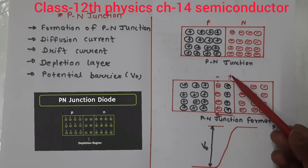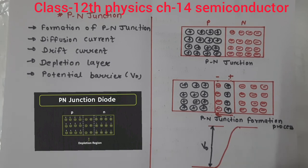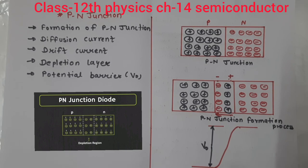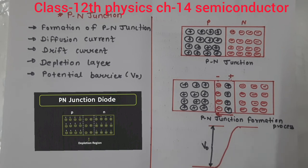Now let's talk about the potential barrier. The higher potential and lower potential sides create a potential barrier at the P-N junction. I hope you have understood how the P-N junction is formed and these two important concepts. In the next video, we will discuss the P-N junction diode, including forward bias and reverse bias — these are very important topics. So meet you in the next video. Till then, keep watching and keep learning. Thank you so much.